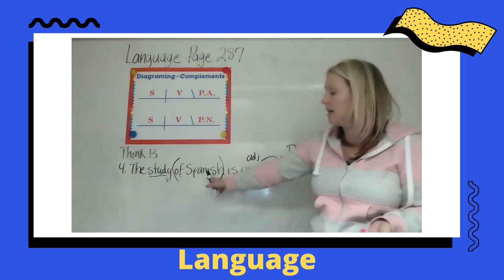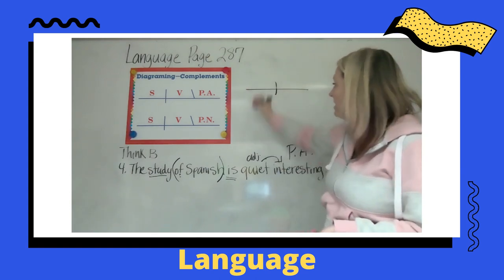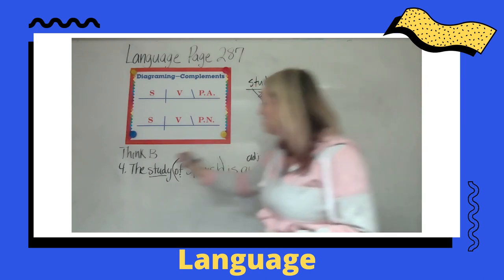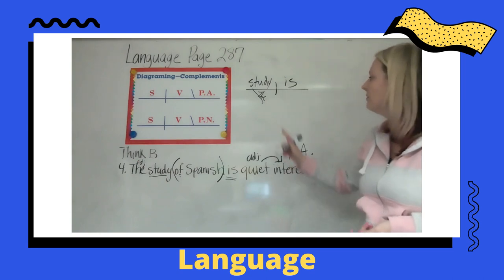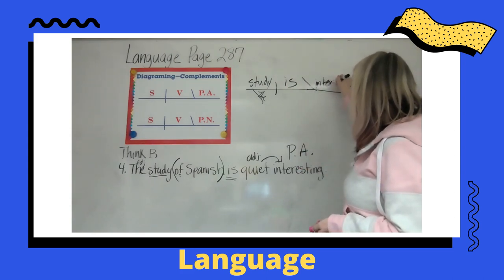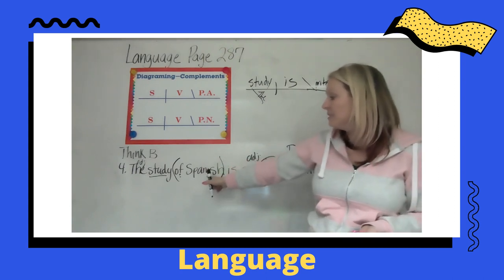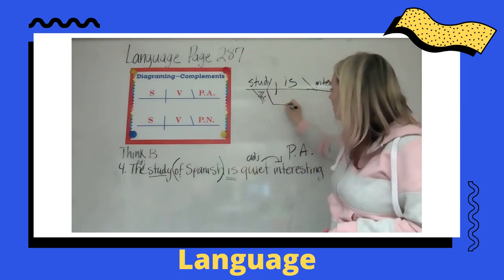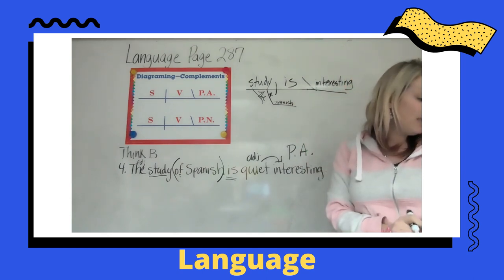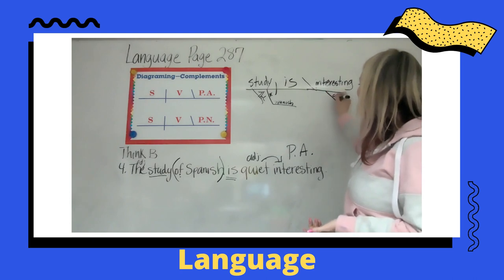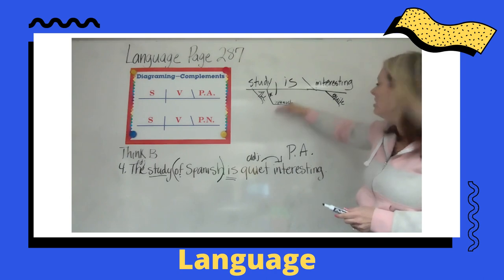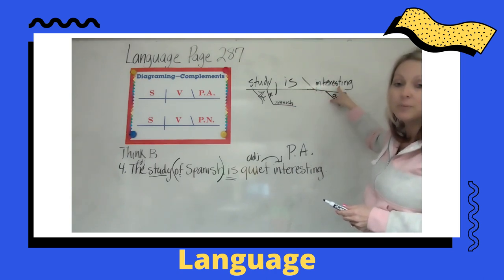Now let's diagram this one — don't forget we have to diagram the prepositional phrase. We start off with 'is,' and the subject is 'study' — 'the' is the adjective. With 'study is,' we then have our predicate adjective with our diagonal line of 'interesting.' Then 'of Spanish' is modifying 'study,' so we come over here and do our diagonal with 'of' as the preposition word and 'Spanish' as the object. Then we also have 'quite' as an adjective describing 'interesting.' So we have our verb, subject, adjective, prepositional phrase, predicate adjective, and another adjective.